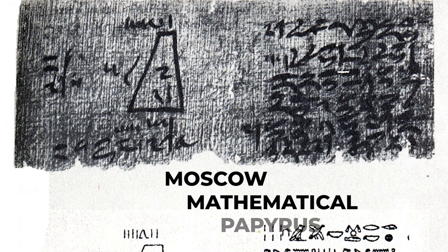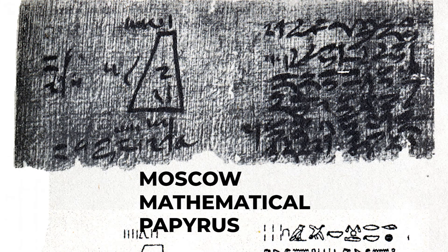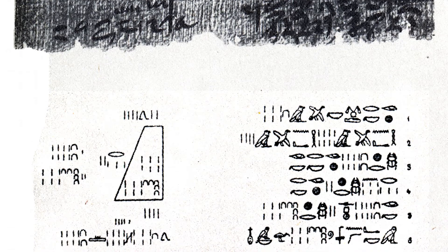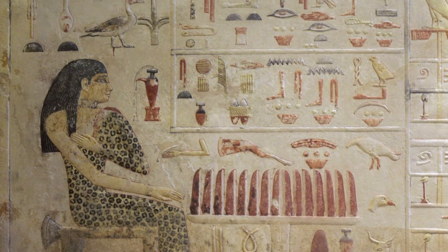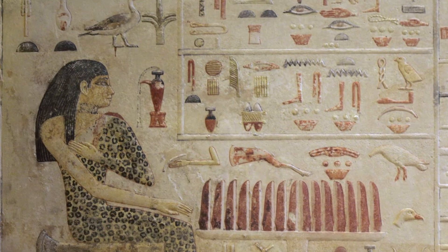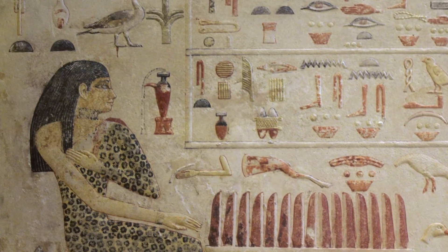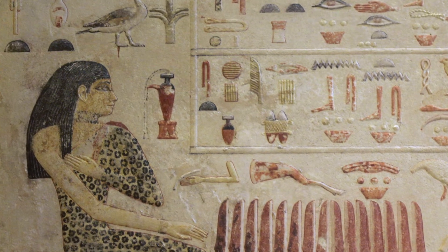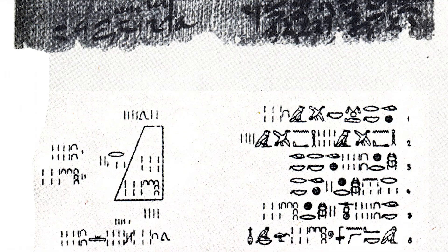The other major mathematical text from Egypt is kept in Russia and is called the Moscow Mathematical Papyrus. While smaller than the Rind Papyrus, the Moscow Papyrus is older. It is a collection of twenty-five problems, a plurality of which deal with PEFSU. A PEFSU measures the strength of beer made from a hecat, or unit of grain — so in essence, these were early algebraic calculations. There are also several geometry problems, including finding the volume of a truncated pyramid.